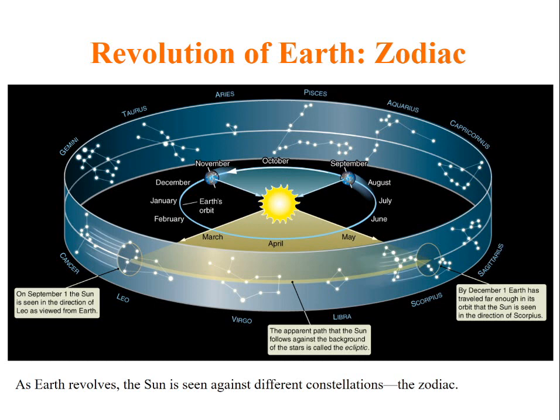While discussing revolution of Earth, we have to talk about Zodiac. As Earth revolves, the sun is seen against different constellations and this is called Zodiac.